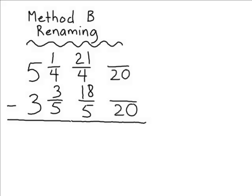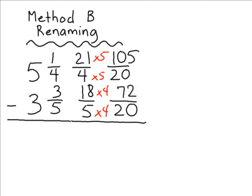We are going to rewrite new fractions with 20 as the denominator. On the top, the 4 increased by a factor of 5, so we increase the numerator of 21 also by a factor of 5, which gives us 105. On the bottom, the 5 increased by a factor of 4, so we increase 18 also by a factor of 4, which gives us 72. The next thing is to subtract the numerators: 105 take away 72 is 33. Remember, the denominator stays the same.